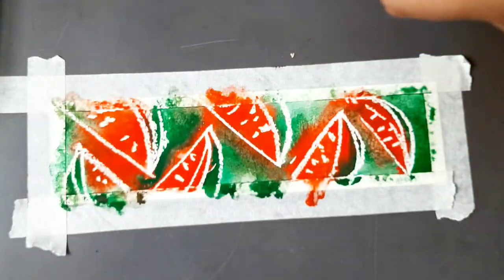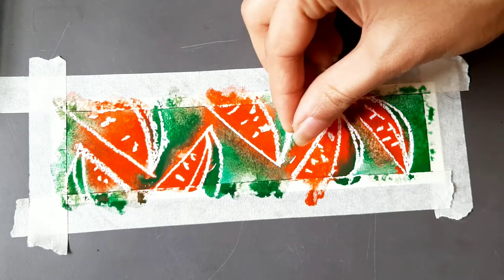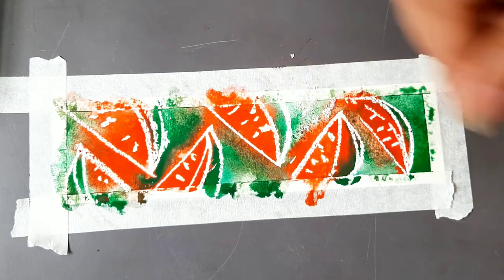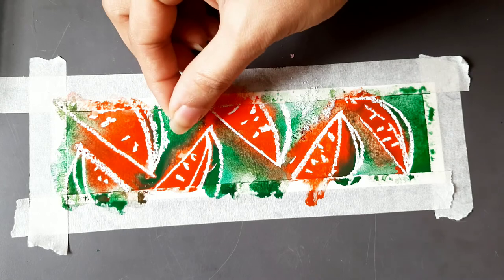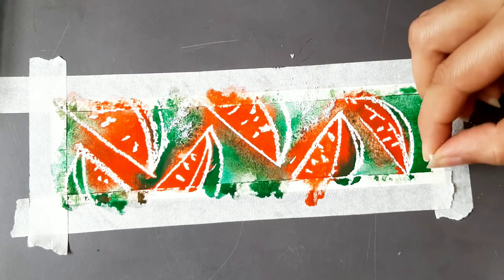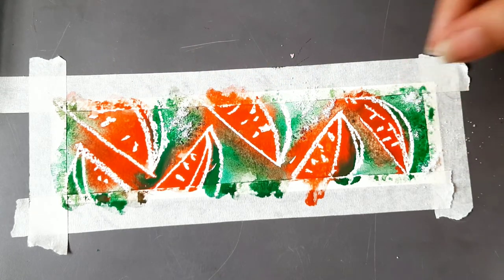I have taken some salt from my kitchen and I'm going to sprinkle it towards the edge of my watermelon slice. So whatever is the background is where I'm going to sprinkle some salt.